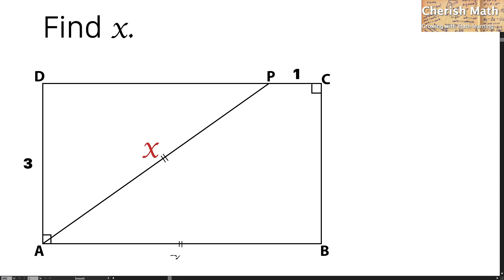Since AB is X, the length of DC is going to be X as well.